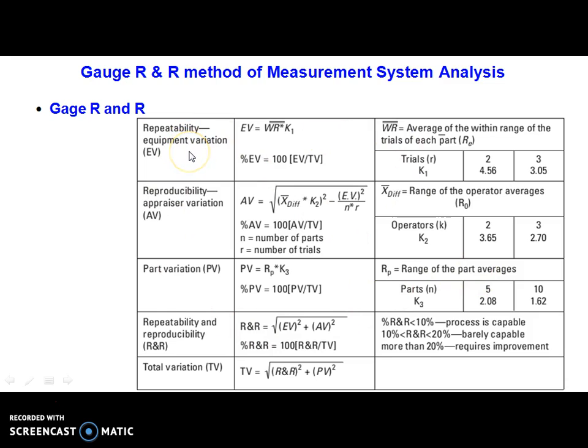The first formula gives us equipment variation (EV), and the second helps us understand appraiser variation (AV). These two components together are used to calculate the overall R&R value.